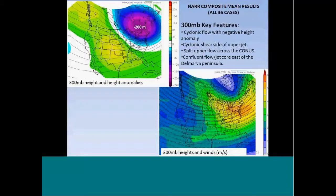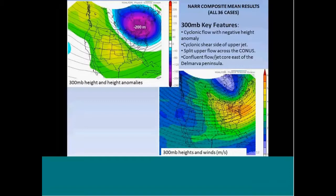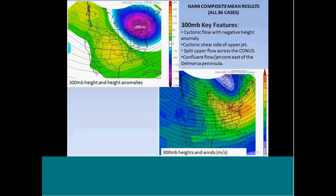We want to look at some key synoptic features now. At 300 millibars, in the mean for the 36 cases, we see a large upper trough across southeastern Canada extending southward into New York and New England, with about a 200-decameter negative height anomaly compared to climatology. We see evidence of split flow: a northern branch jet extending from the Canadian prairies across the Great Lakes and off the mid-Atlantic coast with a small jet core just east of the Delmarva Peninsula, and some evidence of a subtropical jet extending from northwestern Mexico across the southeastern U.S., with cyclonic flow across northern New York and New England.